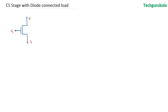We cannot connect gate and source together because then VGS should be greater than VTH, which cannot be possible if we connect gate and source together. We cannot connect drain and source together because in that case, there won't be any current flowing. The only possibility we have is connecting the drain and the gate. In that case, we will be left with two terminals. So this is a diode connection, or MOSFET as a diode.